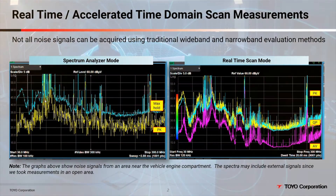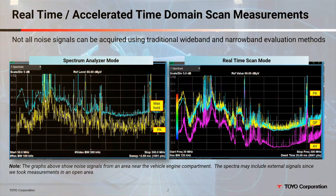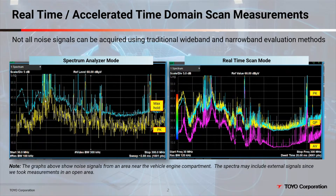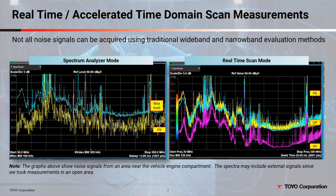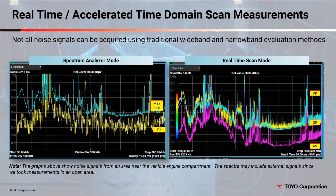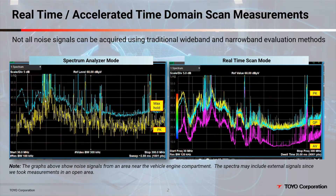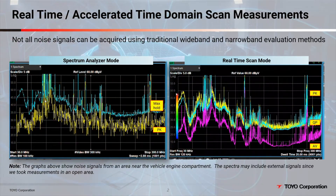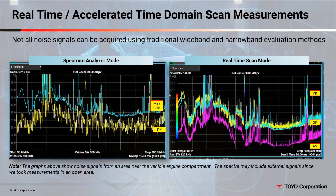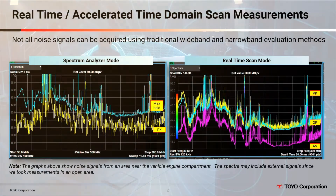The two graphs you see here show the spectrums radiating from the engine compartment of a hybrid car, captured using two different methods. An antenna was situated near the engine to collect the RF signals with the engine turned on and the vehicle in an idle state. We took measurements in open space, so we would expect the spectrums to include some external noise.